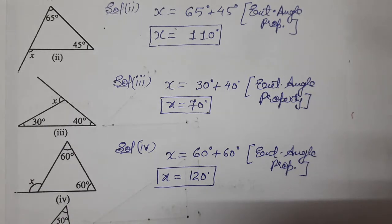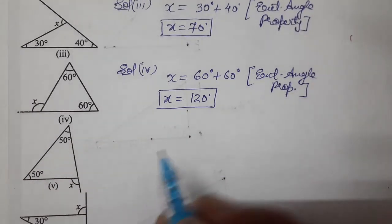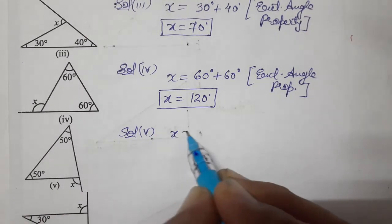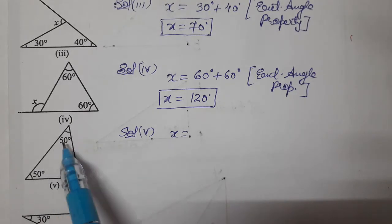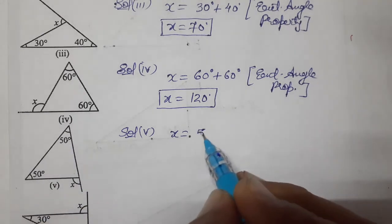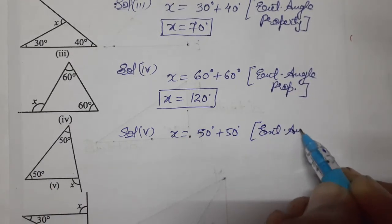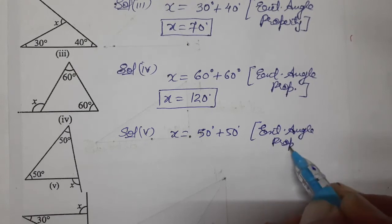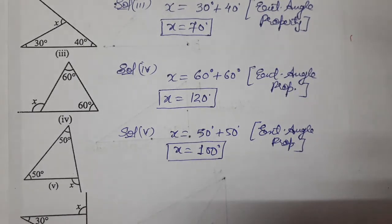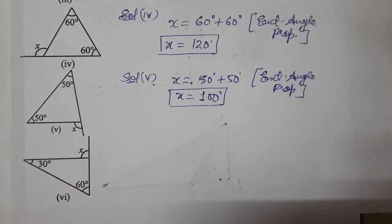There are six types of exterior angles in this question, as studied in our previous video. For this part, the exterior angle X has interior opposite angles of 50° and 50°. By the exterior angle property, X equals 50 plus 50, which equals 100°.